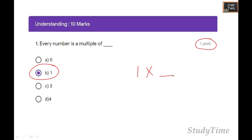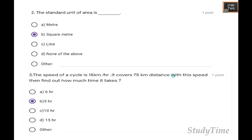Every number is a multiple of one. Next, the standard unit of area is: square meter, meter, liter, or none of the above. The answer is square meter. Area should always be measured in square meter, square units. Next, the speed of a cycle is 15 kilometer per hour.